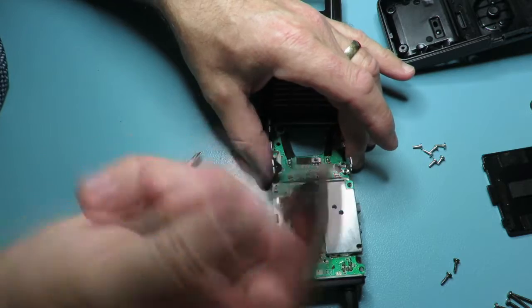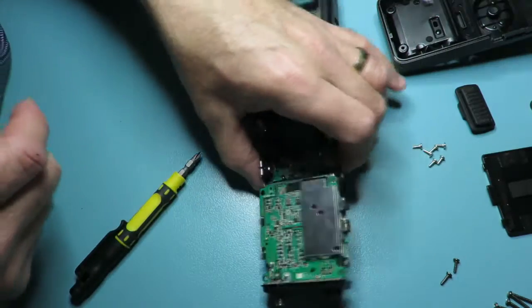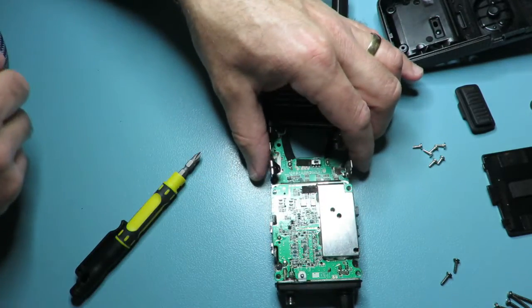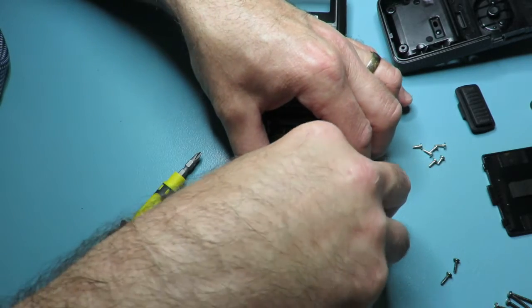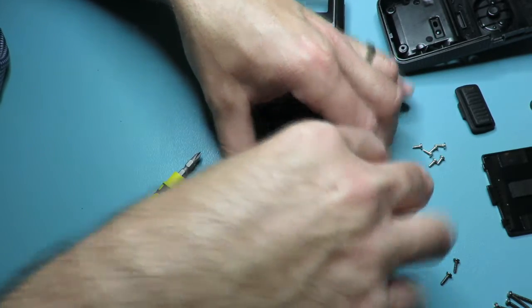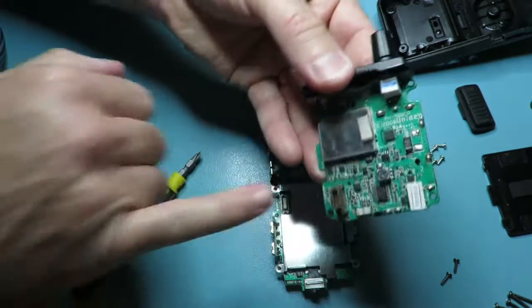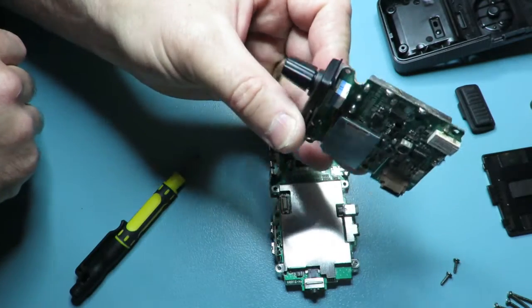Remove the cover for the side button. The top module literally just pulls off, there's one connector there and that's all that connects the two boards together.